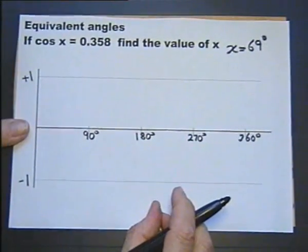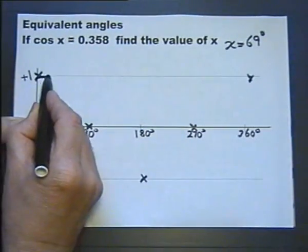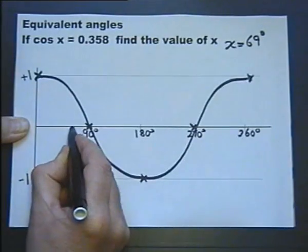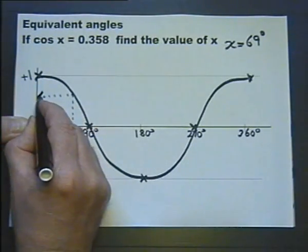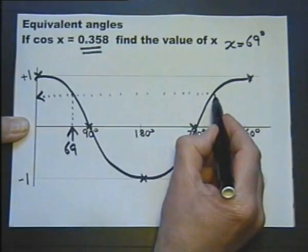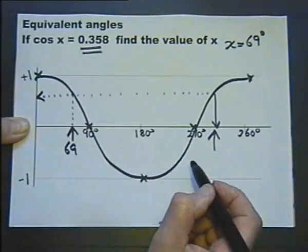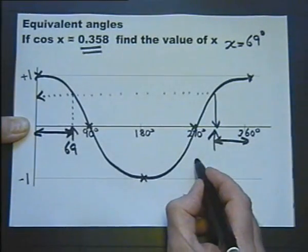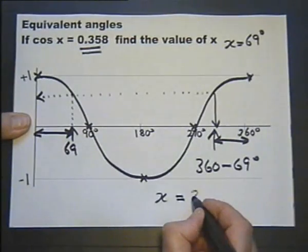If we sketch the graph, the cosine graph goes from there to there, which does help us show that this angle here would also have a cosine value of 0.358. Looking at the symmetry of the graph, we're seeing that that is 69 degrees, so that must be 69 degrees. Therefore this angle can be worked out, so the second value of our x is going to be 291 degrees.